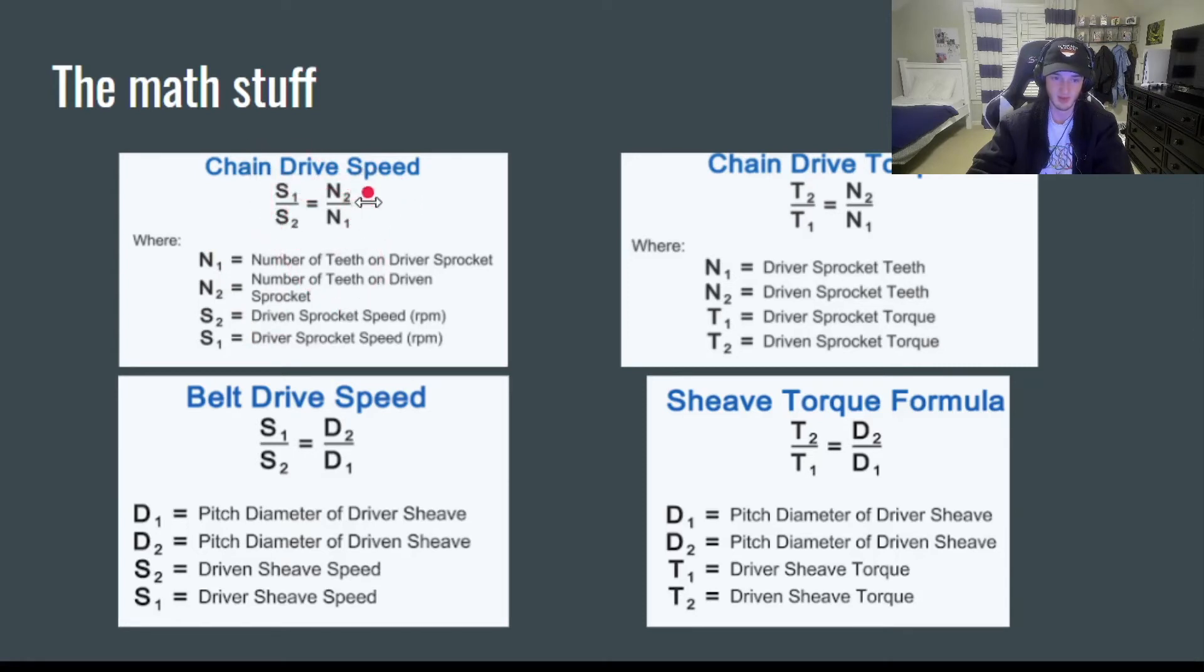So this number is going to be 100 RPM. And the math I just did for that one is basically what you would do for all of these, except the only difference between speed and torque is that speed is an inverse proportion.